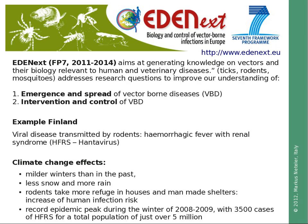The Hantavirus is affected by climate change — for example, milder winters with less snow and more rain — which leads to rodents taking more refuge in houses and man-made shelters, hence leading to an increase in human infection risk. During the winter of 2008 and 2009, there was a peak epidemic record with 3,500 cases for a total population just over 5 million people.